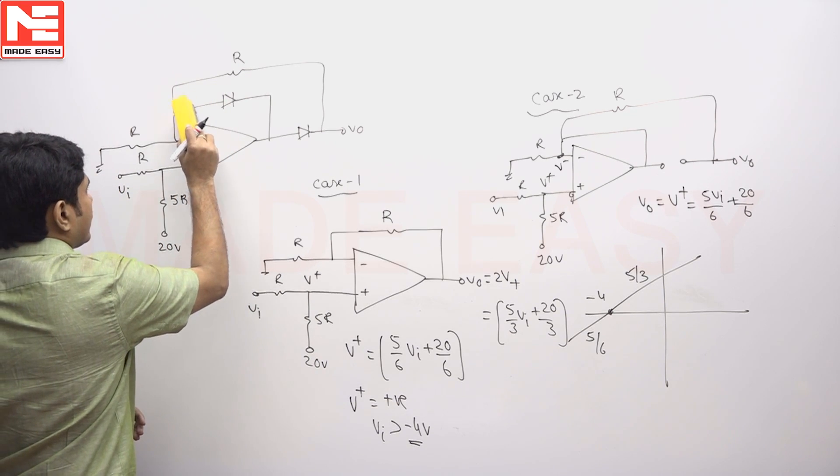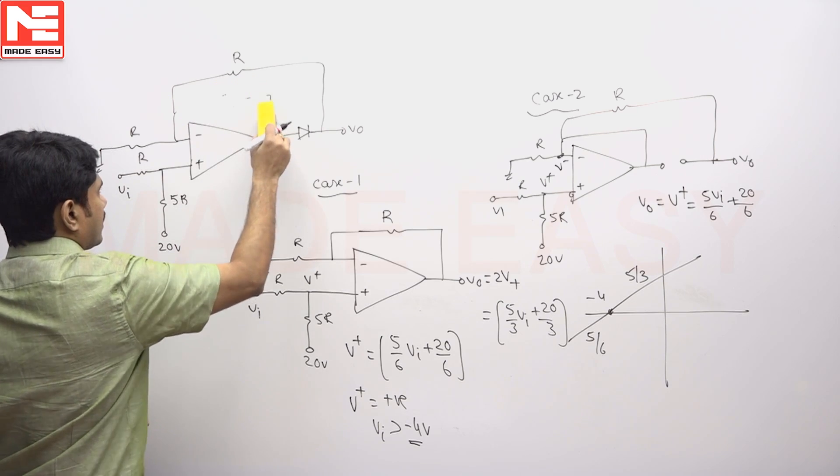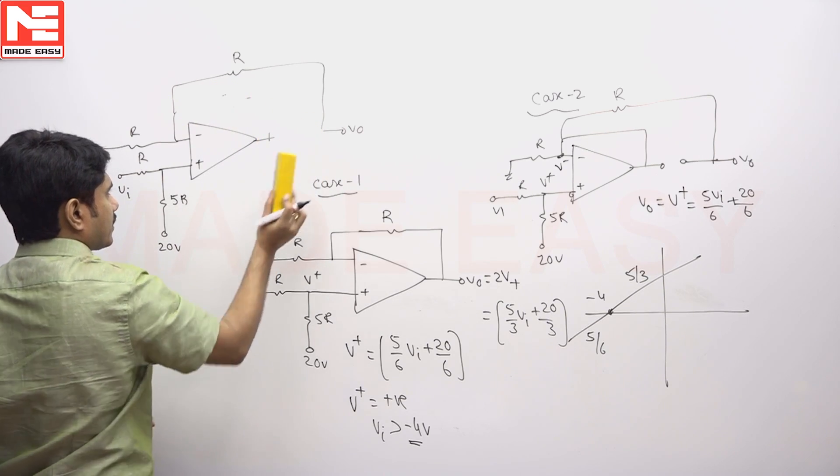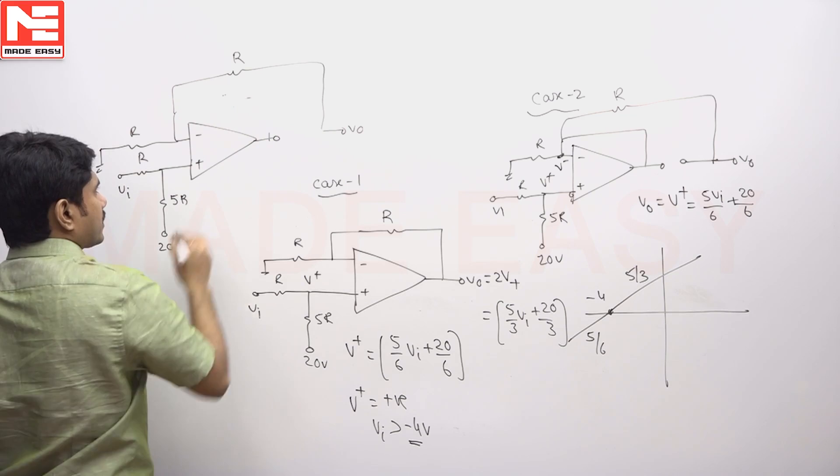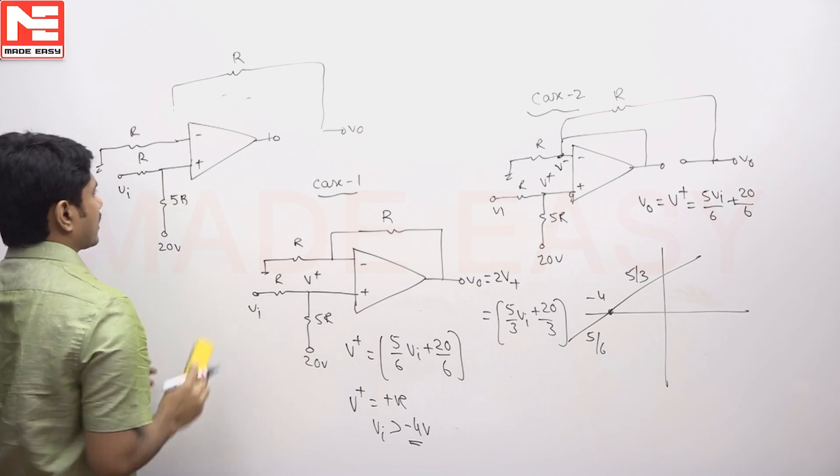To find out open loop conditions, first assume that this diode is not there, this diode is also not connected. If you see, this looks like open, this is also not connected.